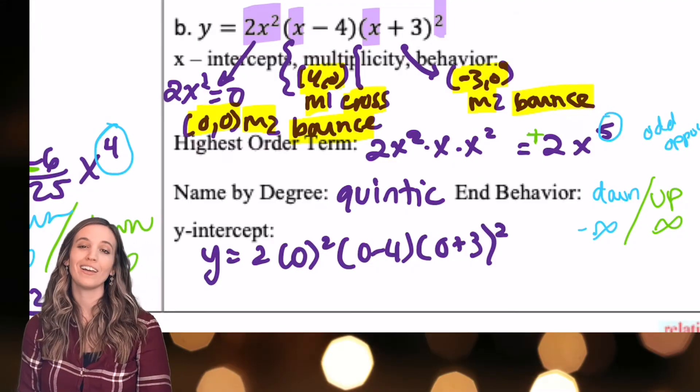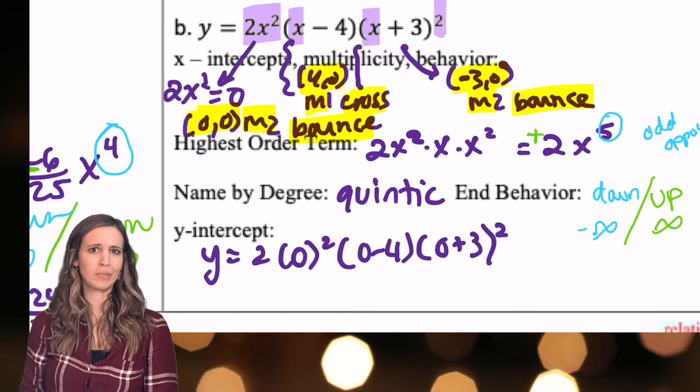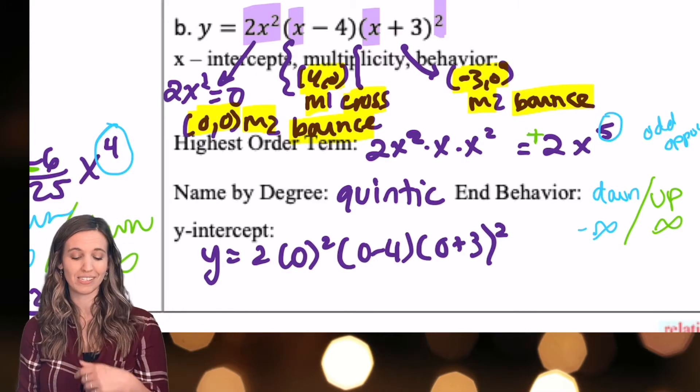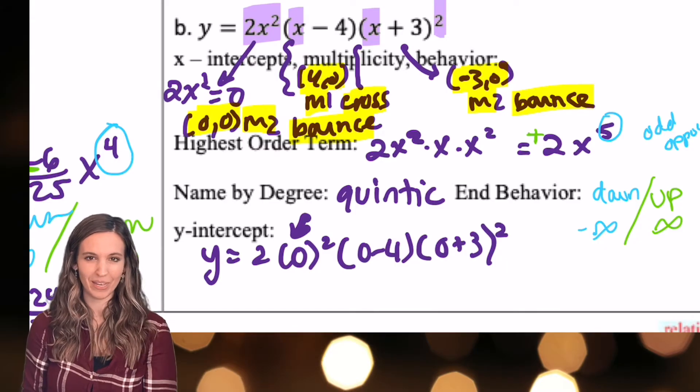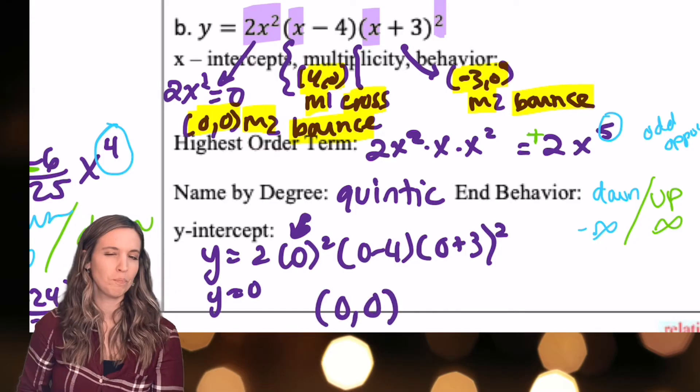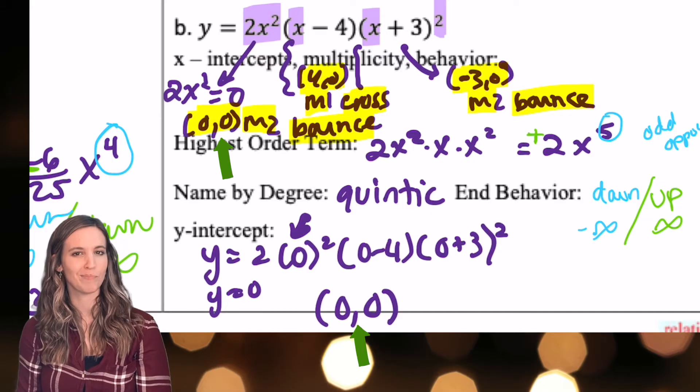Now when I go find the y-intercept, of course I plug in zero for x, but what happens? I end up multiplying everything by zero right out in the front. So I already know what's going to end up being zero. So y-intercept is zero, zero. Makes sense because I had an x-intercept at zero, zero.